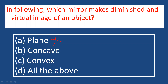We have concave and convex mirrors. The convex mirror always forms a diminished and virtual image. Whereas a diminished image formed by a concave mirror is going to be real. So if you want a diminished and virtual image, option C — the convex mirror — is the correct answer.